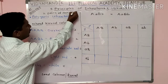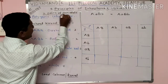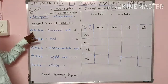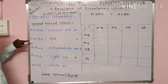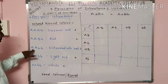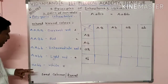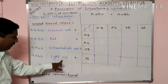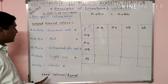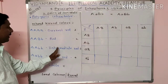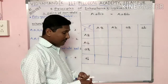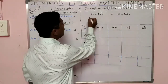With four dominant alleles the color is darkest red. Two dominant alleles gives intermediate red. With three dominant alleles — one recessive — the color is dark red. One dominant gives light red. And when all alleles are recessive — zero dominant — it is white.